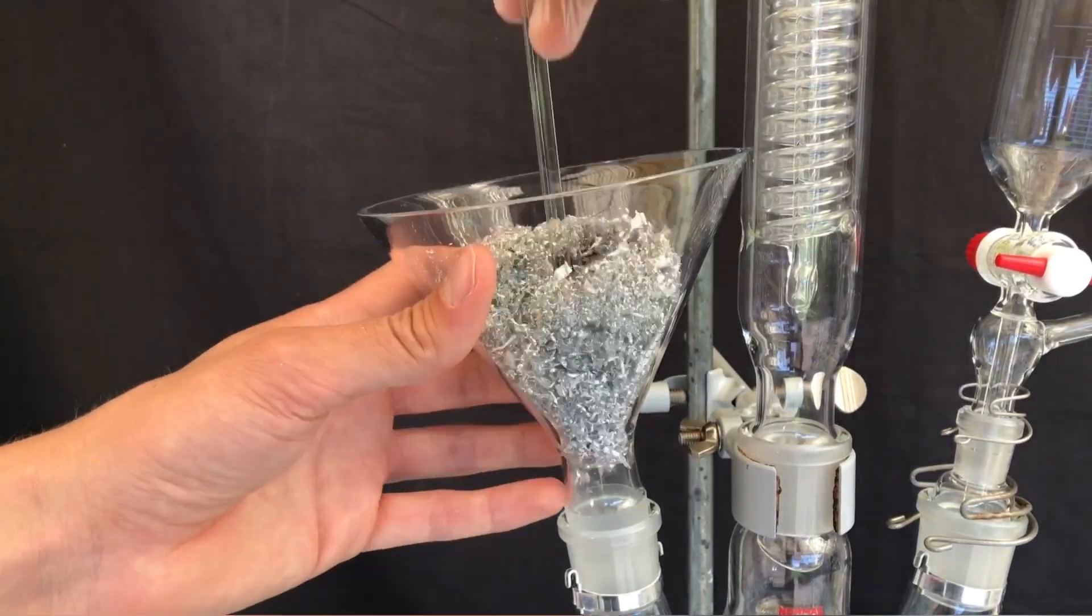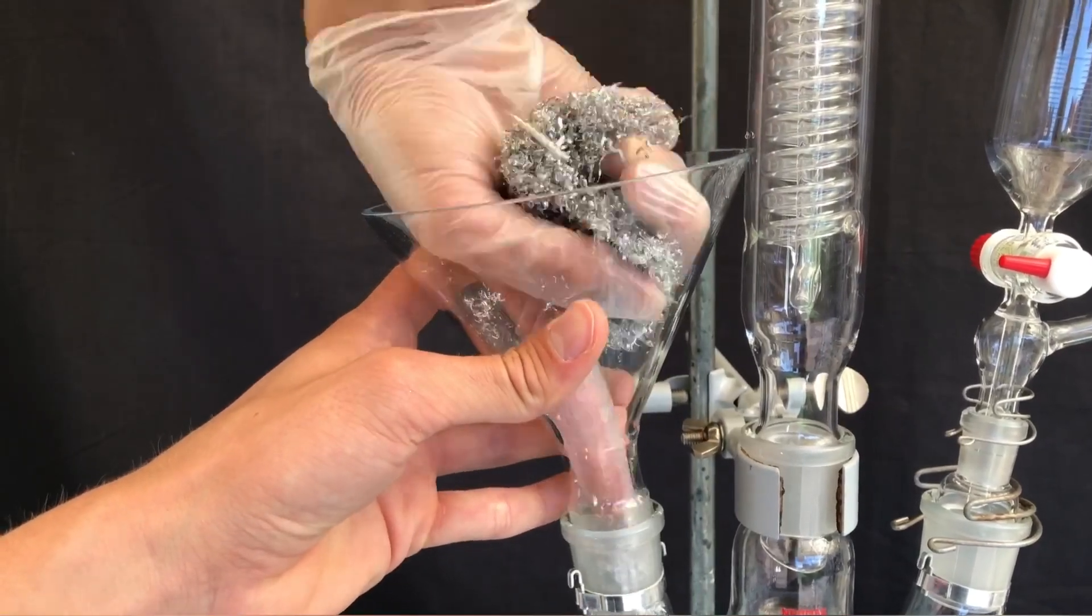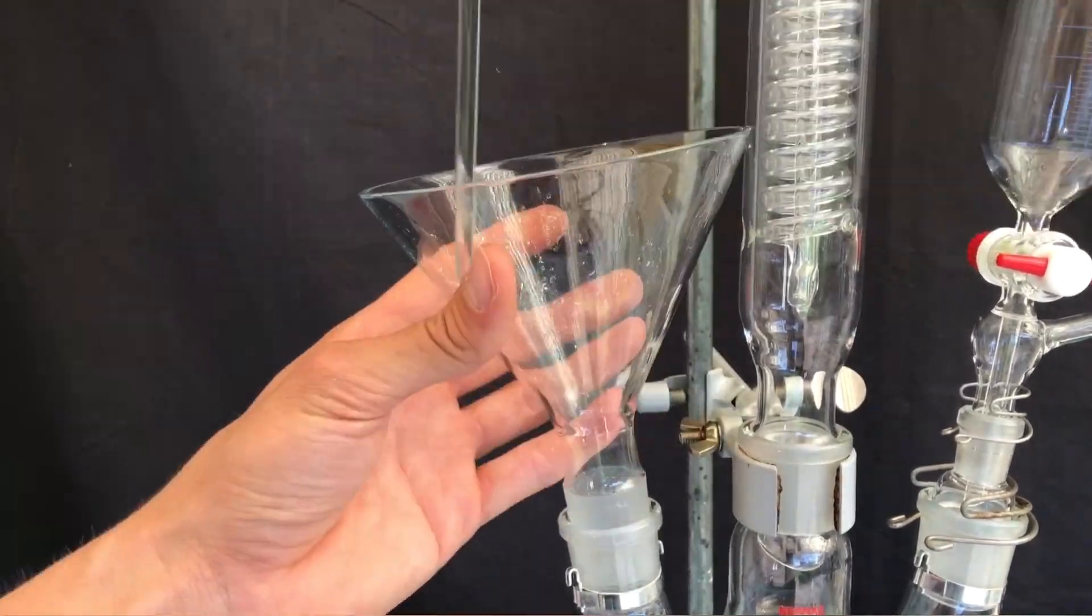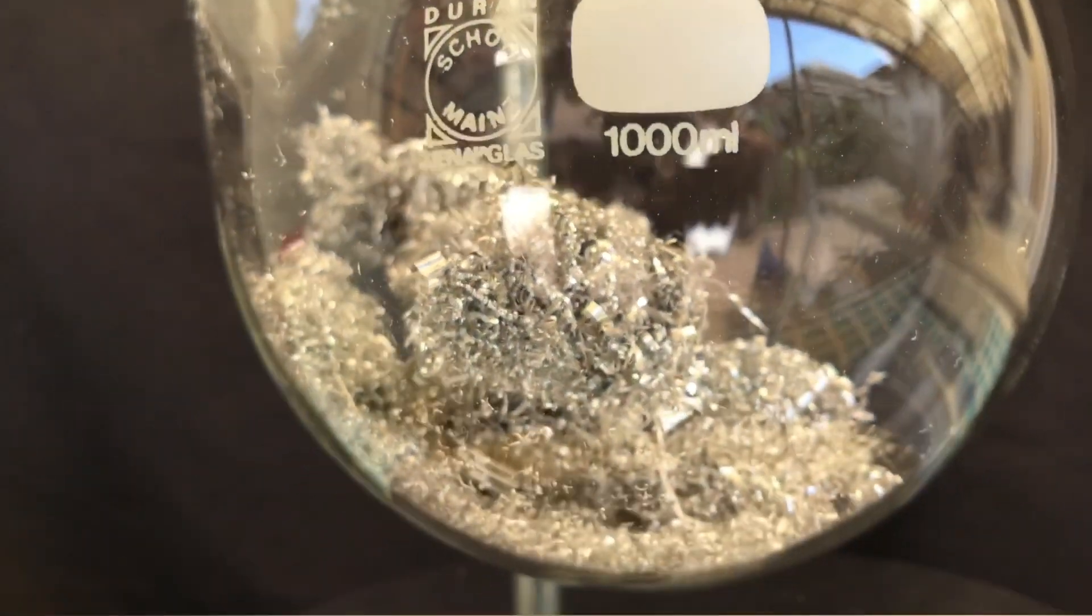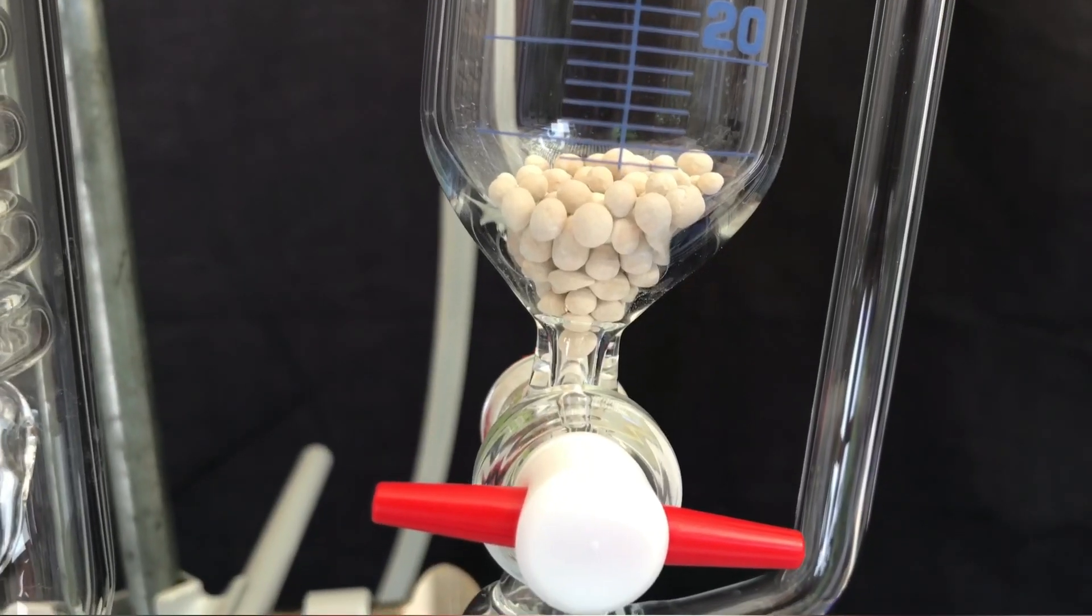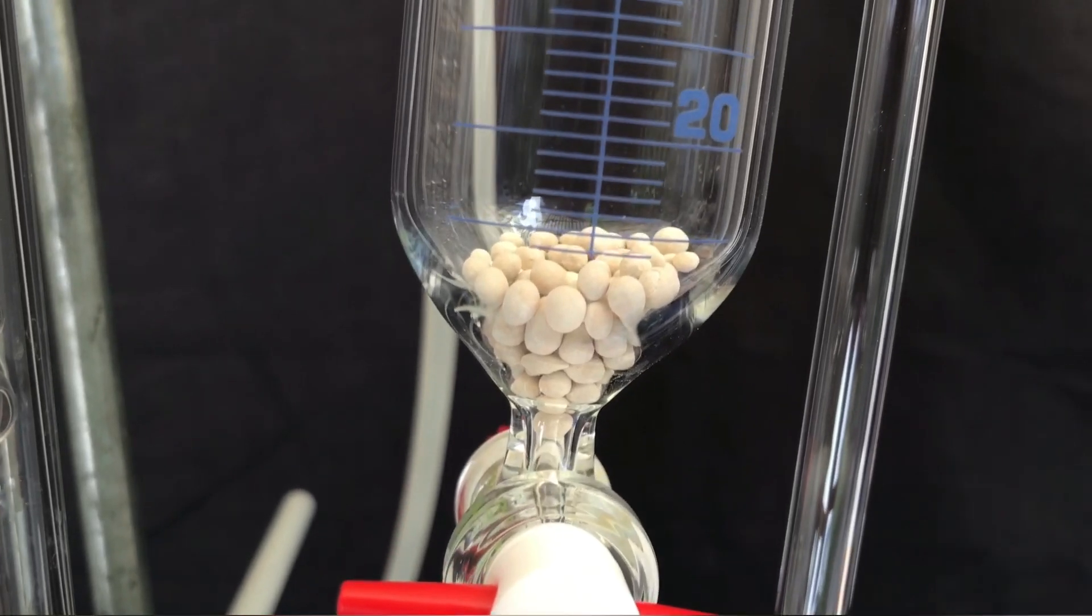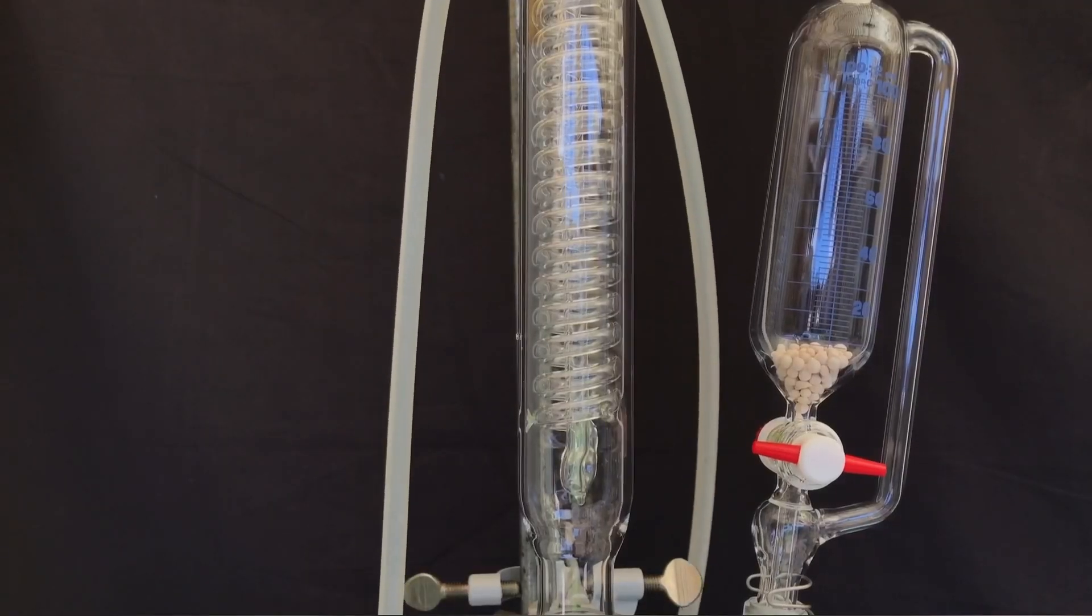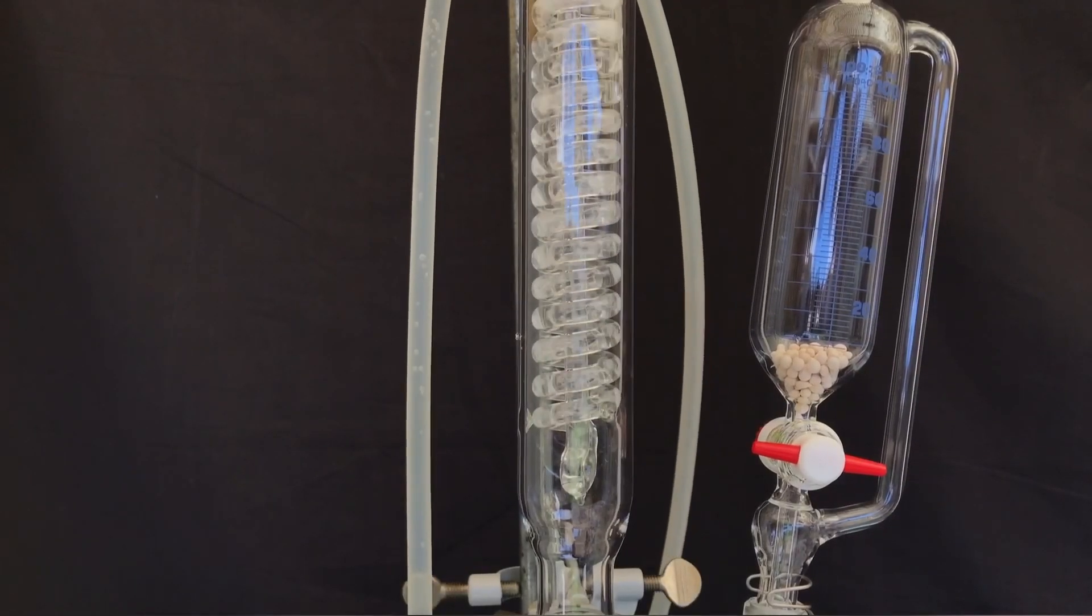Using this powder addition funnel, all of the magnesium was added to the round bottom flask. It was tedious to stuff it all in, but we managed to do it. To keep the reagents even more dry, sieves were added to the addition funnel. Before proceeding, the reflux condenser was flushed with water.